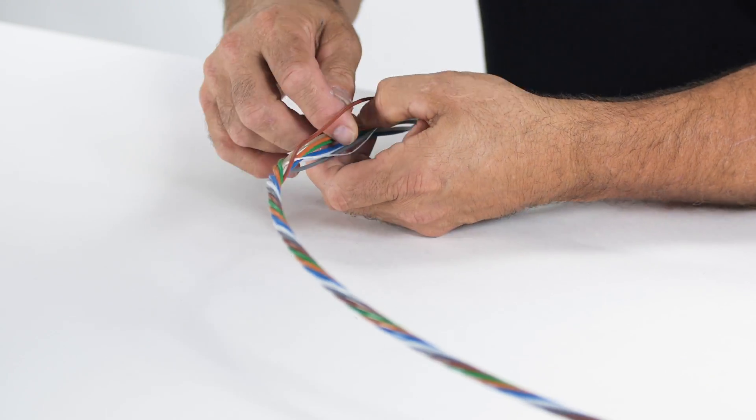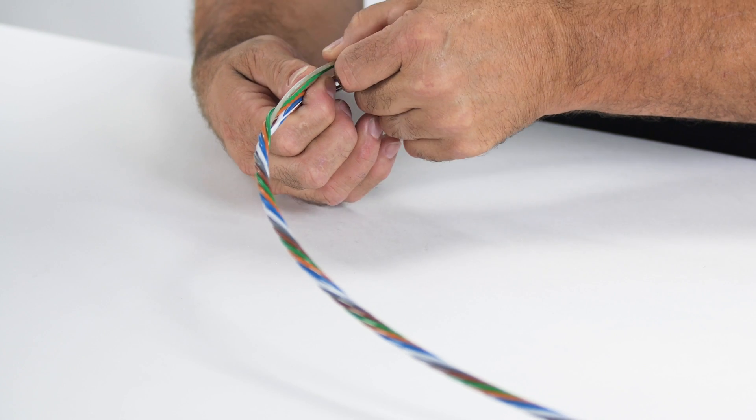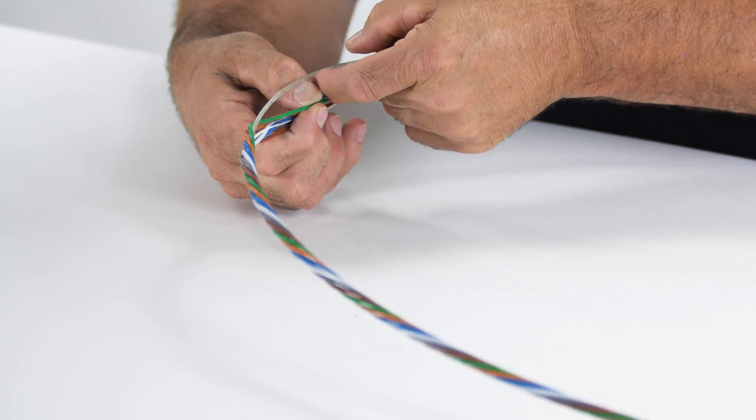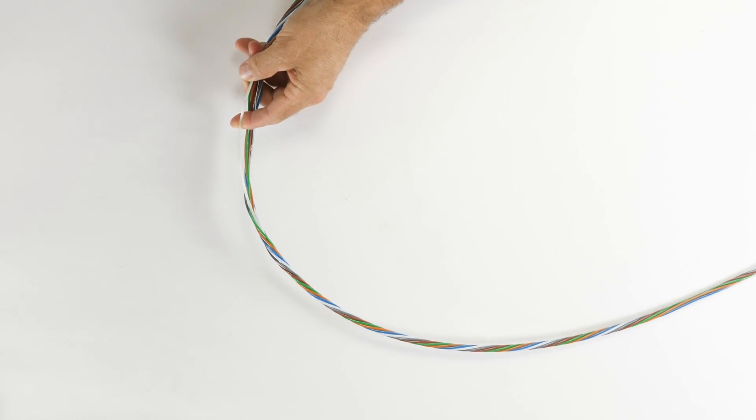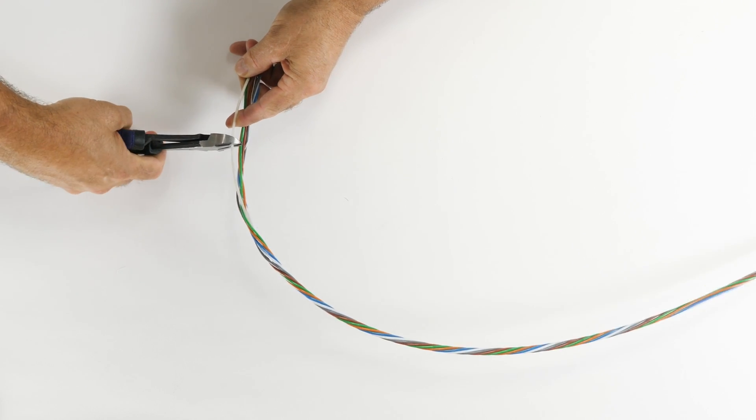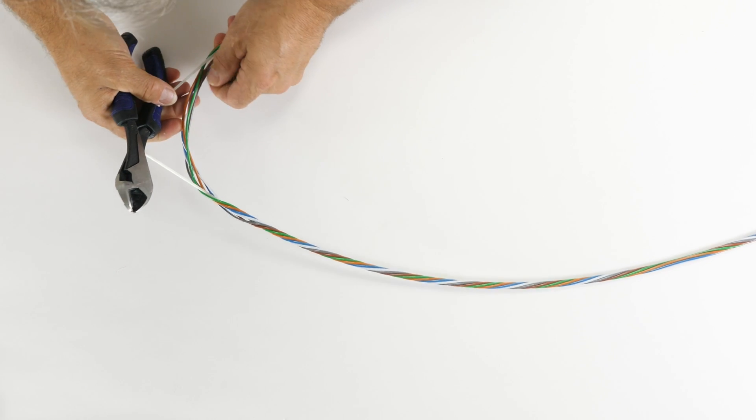Unwind the buffer tubes at the reverse oscillation point only. Using a pair of diagonal cutting pliers, cut both the water-blocking thread and FRP rod in the center of the opening.